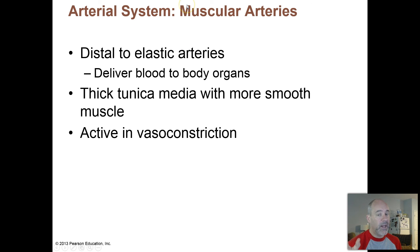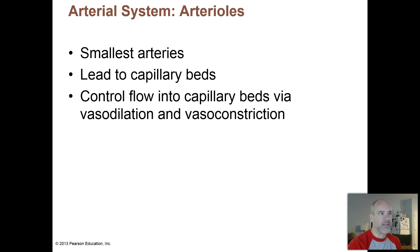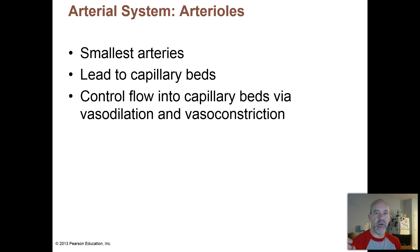The muscular arteries are medium-sized arteries containing a lot of smooth muscle in the walls. These are the ones taking blood to particular body organs and locations, and they are active in vasoconstriction. When we learn about how your sympathetic nervous system controls vasoconstriction, these muscular arteries are involved. Arterioles are the smallest ones — they lead to your capillary beds and are also involved in vasoconstriction and vasodilation.